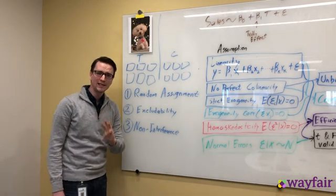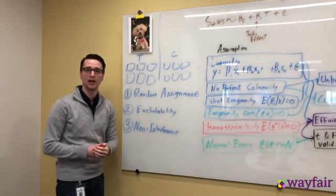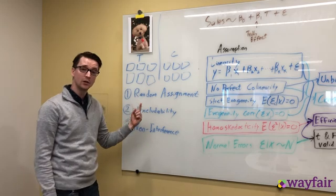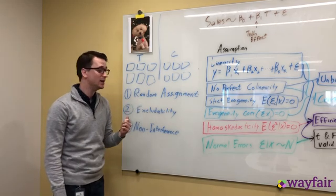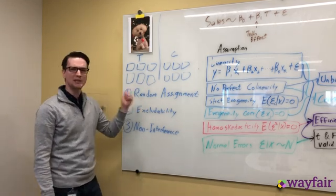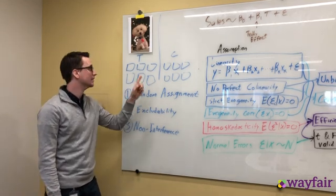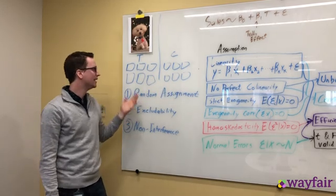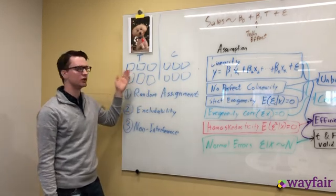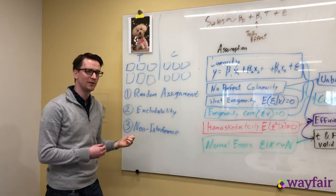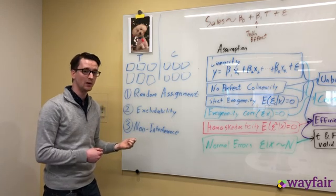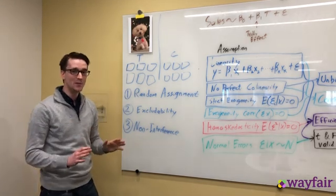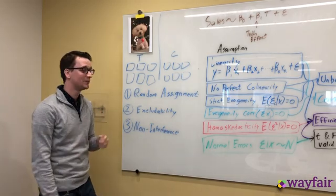But there are three key assumptions here to make sure that our estimate is unbiased. First, random assignment. This means that we need an apples-to-apples comparison between the treatment and control group. You can imagine that if we only gave the treatment to people who had been shopping for dog beds before but then never bought them, we'd have a very biased effect.